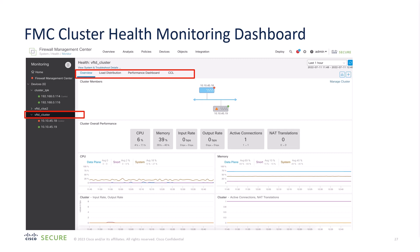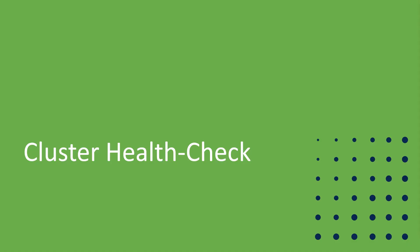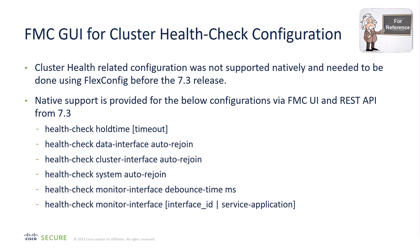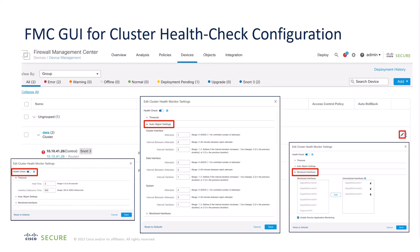As far as the cluster health check is concerned, we've simplified the usability. Before 7.3, you had to use FlexConfig — a way to compose chunks of CLI commands for the data plane and deploy them to the data plane. But now in 7.3, you can deploy this through the UI in a very intuitive manner. Here we show you the screens involved in performing the health check in the FMC.